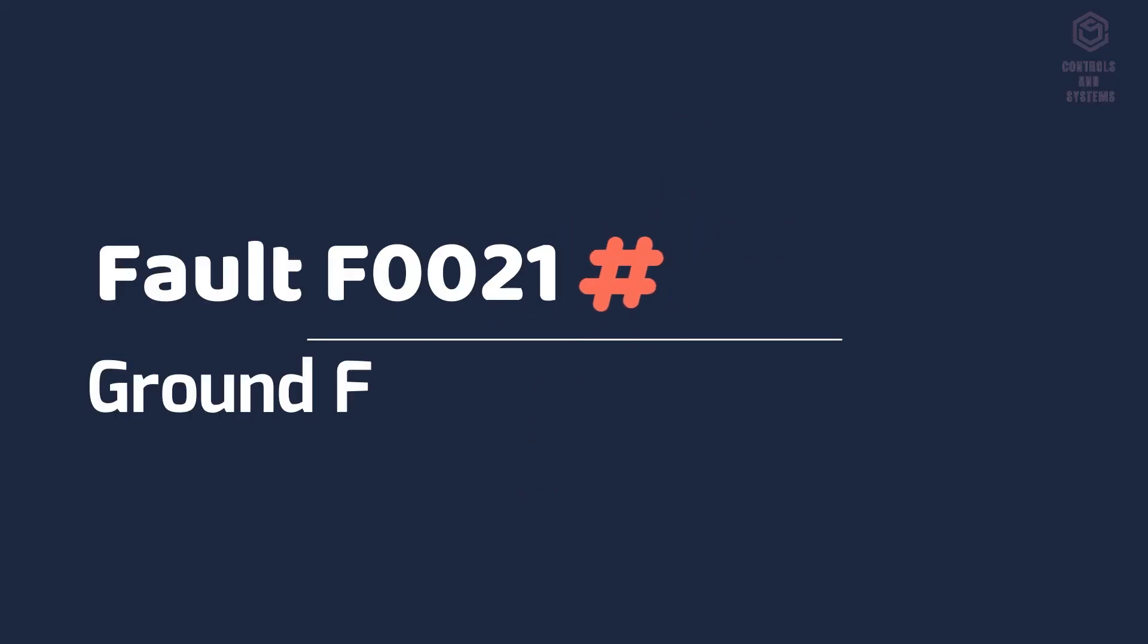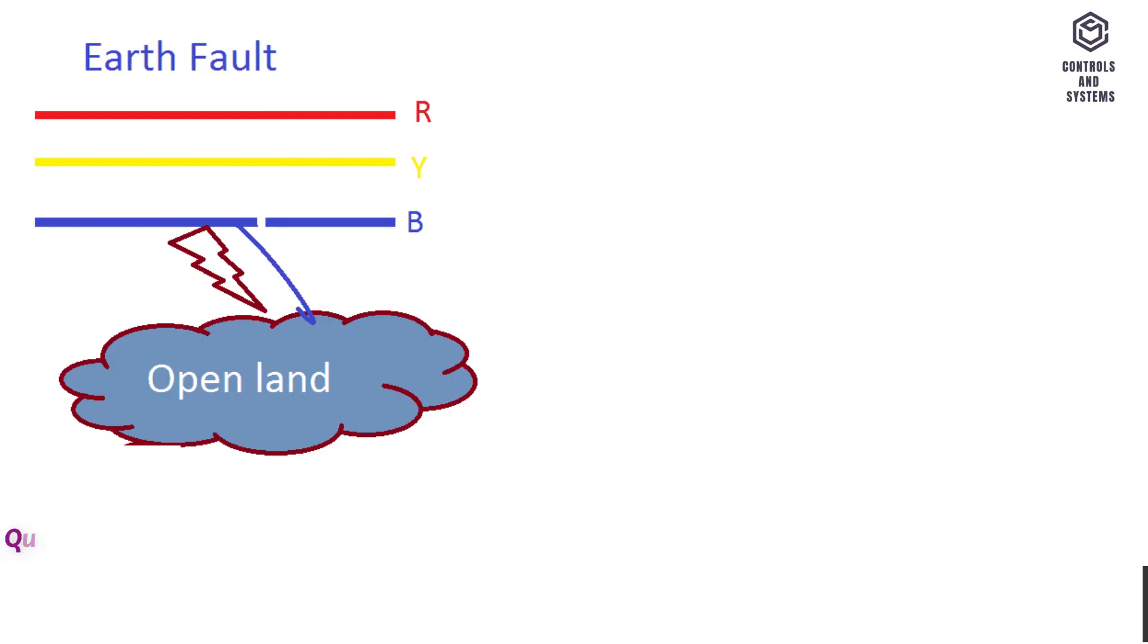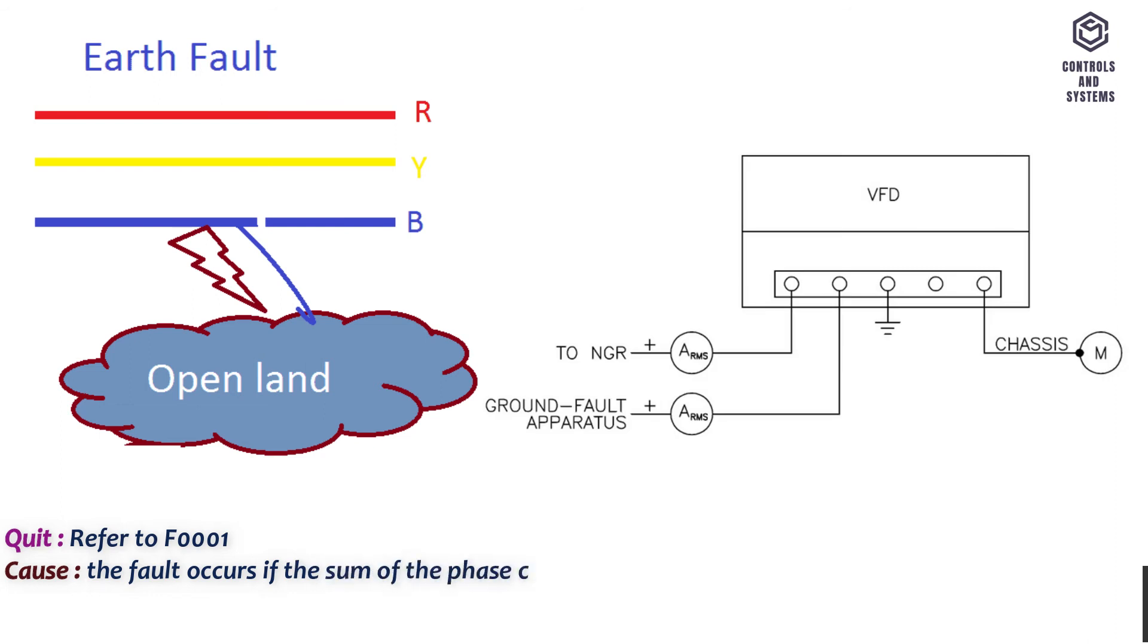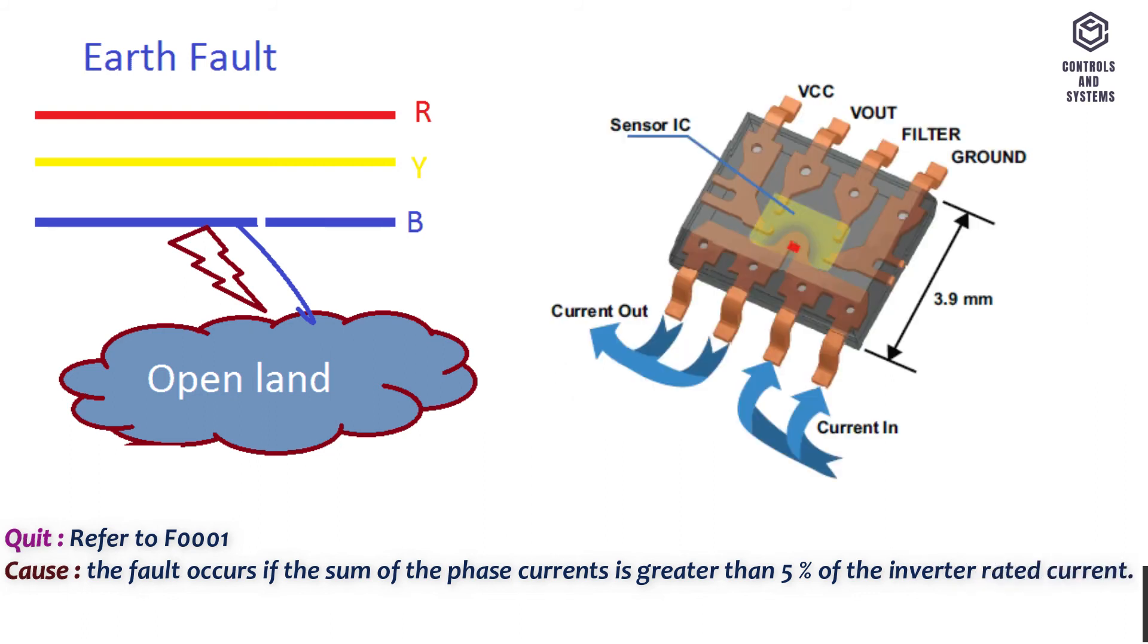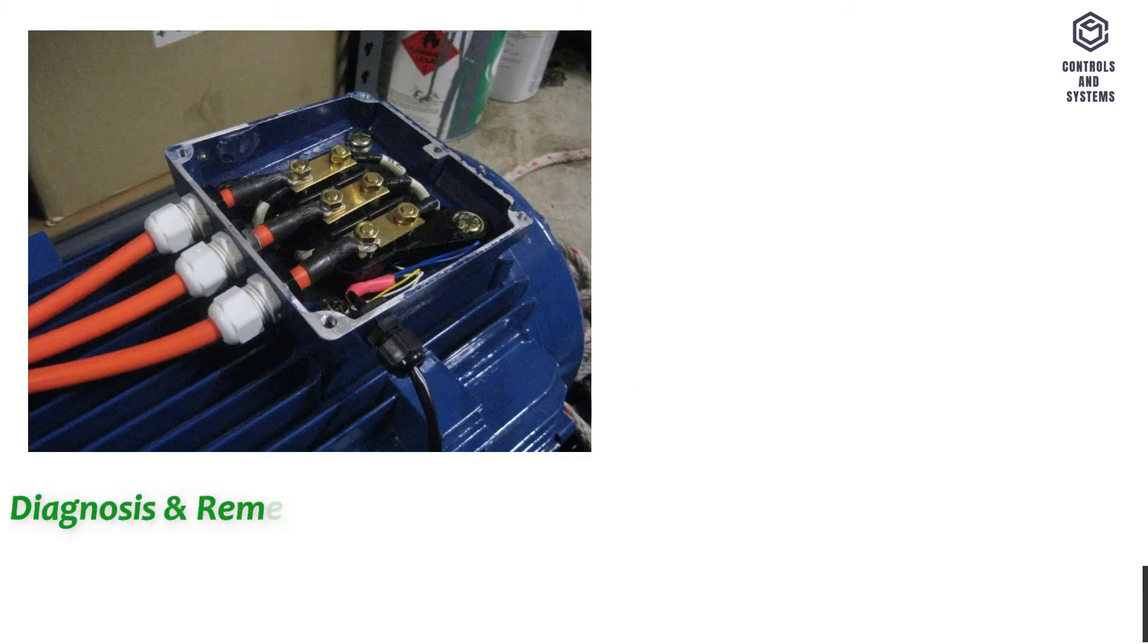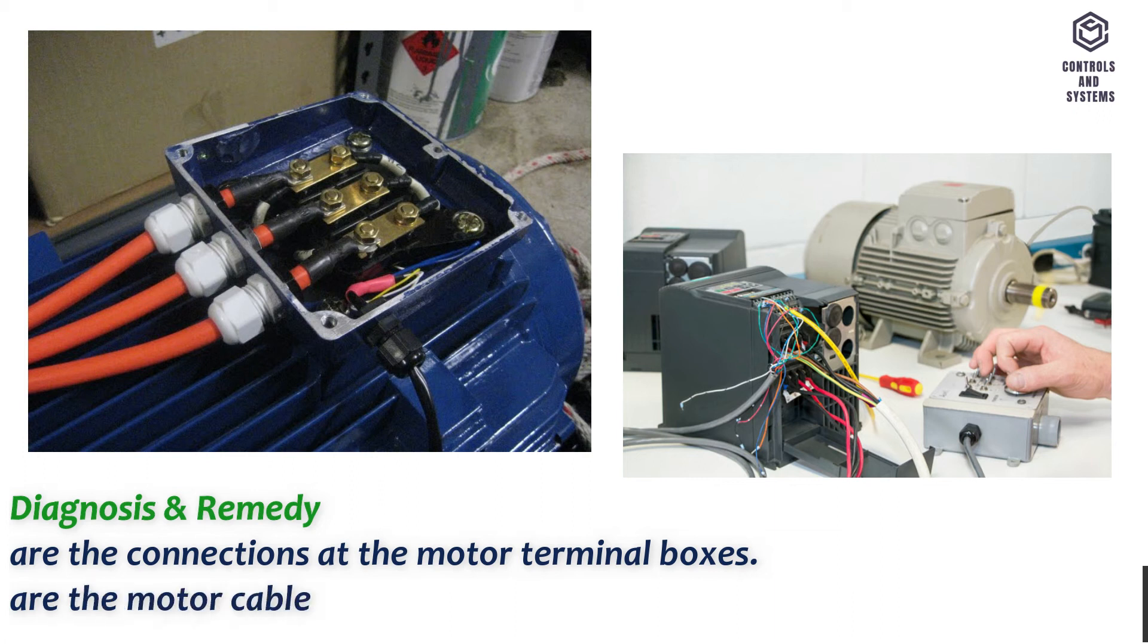Fault F0021 ground fault. Quit: Refer to F0001. Cause: The fault occurs if the sum of the phase currents is greater than 5% of the inverter rated current. Note: this fault only occurs for inverters with three current sensors, sizes D2F, GX, FX. Diagnosis and remedy: Are the connections at the motor terminal boxes? Are the motor cable connections at the inverter?